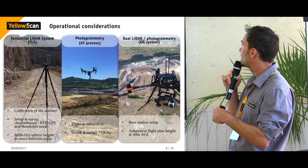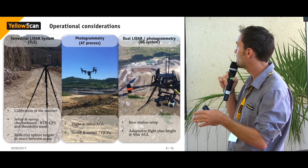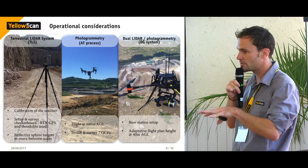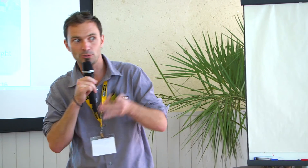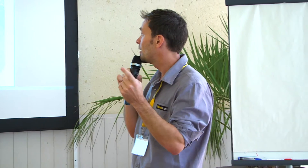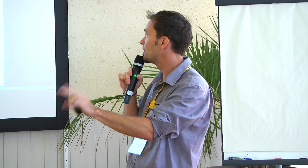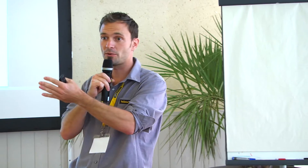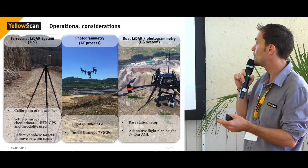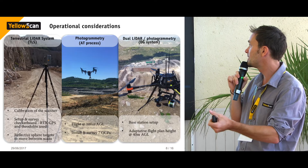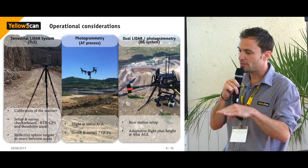On the other side, the YellowScan Surveyor combo only requires a base station to be deployed — recording atmospheric corrections and GNSS observations. You're not talking RTK; you're talking PPK. So you can be five kilometers away and still get good correction results.